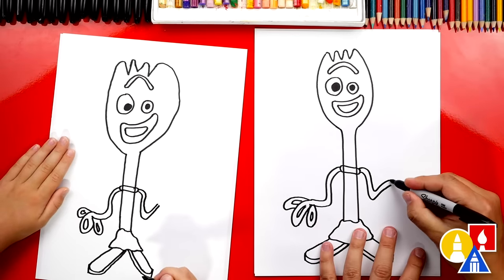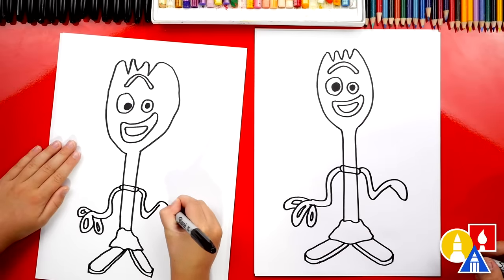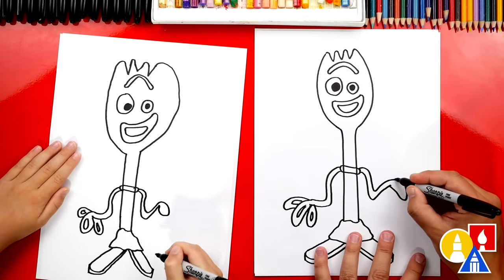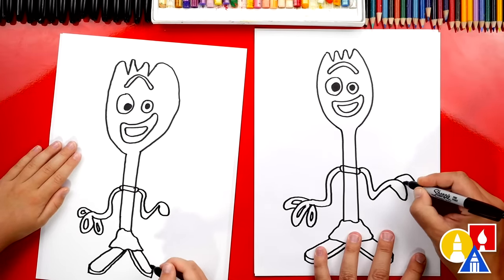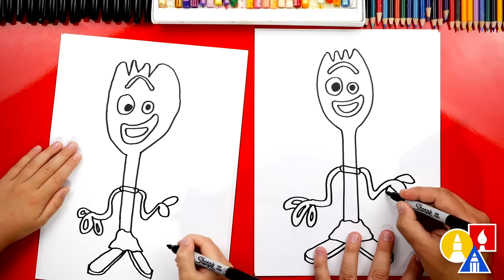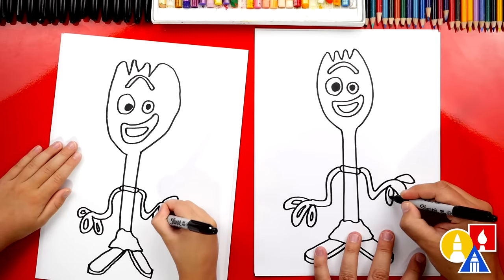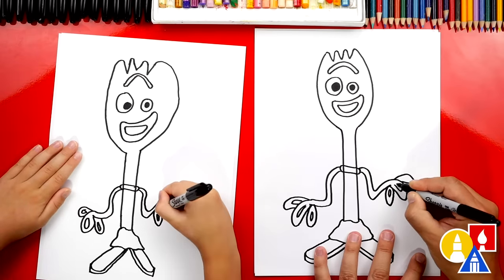Now let's draw his fingers. We'll draw the middle loop first. Then let's draw the outside one. He's got three loops for fingers. Then we'll draw another one for the third one. And then the inside shapes so that they look like loops.